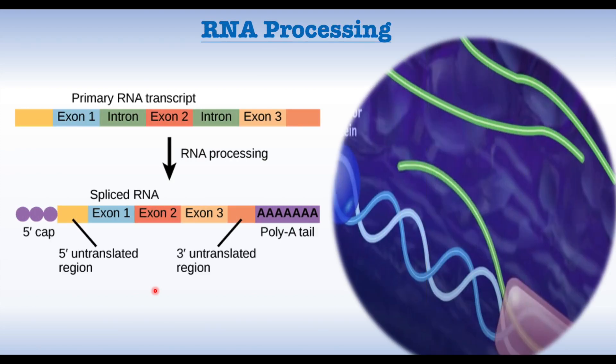RNA processing is the series of modifications that a premature RNA undergoes after being transcribed from DNA to become a mature messenger RNA molecule that can function in the cell. It occurs in both prokaryotic and eukaryotic cells, but the steps are more complex in eukaryotes. The three steps for messenger RNA processing are: first, capping. A modified guanine nucleotide five prime cap is added to the five prime end of the premature messenger RNA. This cap protects the RNA from degradation and helps in ribosome recognition during translation.